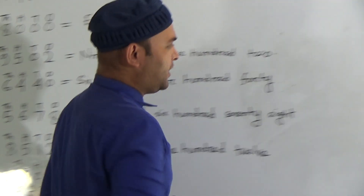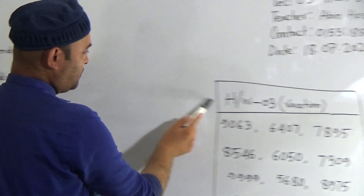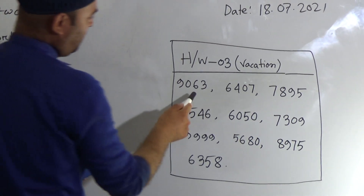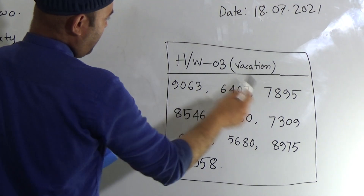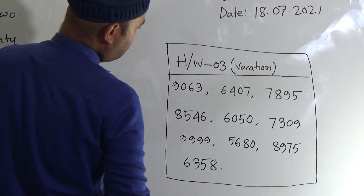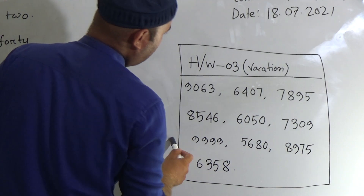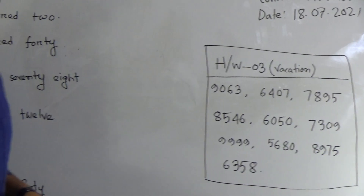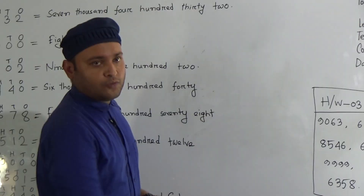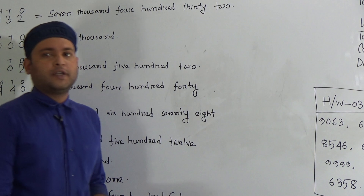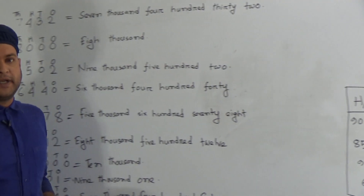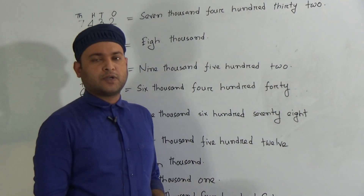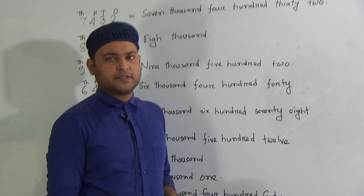I hope you understood how to write numbers in words. For your HW number three there are ten numbers, and you have to submit this homework after Eid-ul-Adha vacation. Practice it at home more and more, get help from your parents, take care of yourself. See you soon — until then, Allah hafiz.